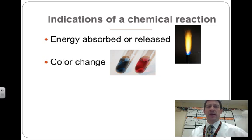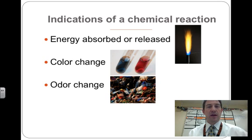Color change is a good indicator as well. In this case, you see up here, we've used indicator to change the color of the solution as we change the pH of the solution. Color change is an example of a chemical reaction or an indicator that one has occurred.